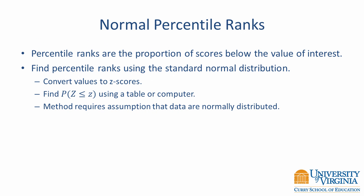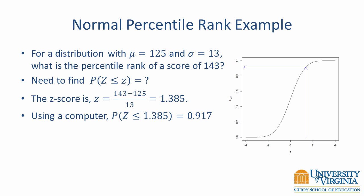For normally distributed data, the percentile rank is obtained by converting all values to z-scores — that is, we standardize the values to have a mean of 0 and a standard deviation of 1. Then we use the standard normal CDF to obtain the probability of observing a value less than or equal to a z-score. For example, suppose the population distribution has a mean of 125 and a standard deviation of 13. The percentile rank for a score of 143: we first convert 143 to a z-score to find 1.385. Using the standard normal CDF, the probability that z is less than or equal to 1.385 is 0.917, meaning about 92% of examinees scored less than 143.